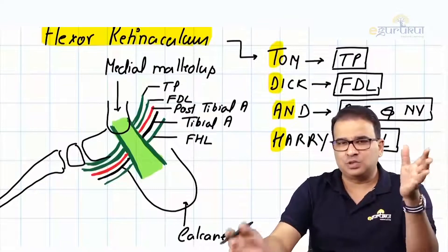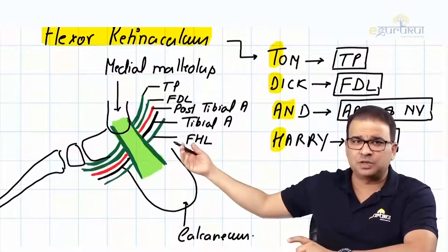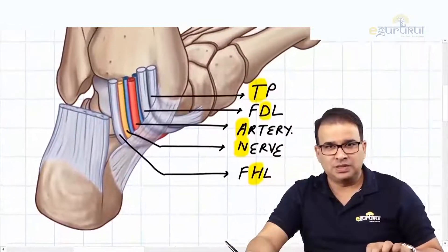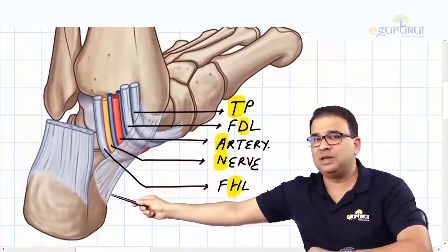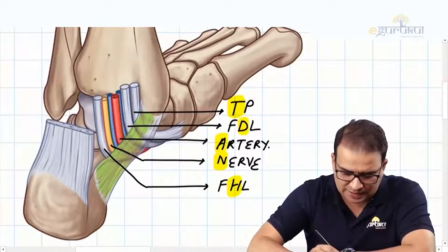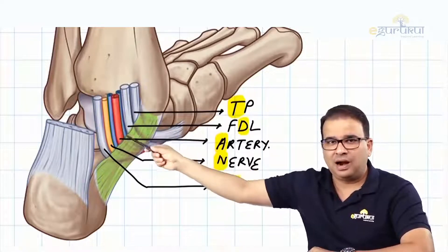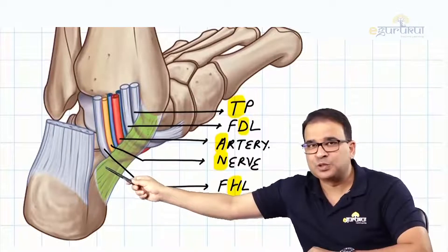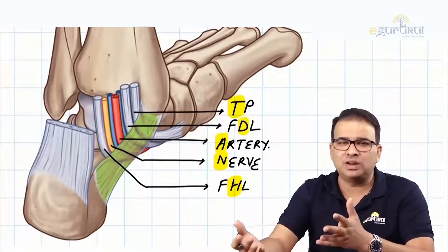Let me show you the atlas picture to correlate — note it is the mirror image for the other foot. You can see the flexor reticulum attaching to the medial malleolus and to the medial surface of the calcaneus. Starting from tibialis posterior, then flexor digitorum longus, then the posterior tibial artery, the tibial nerve, and most posteriorly the flexor hallucis longus. That is the arrangement deep to the flexor reticulum.